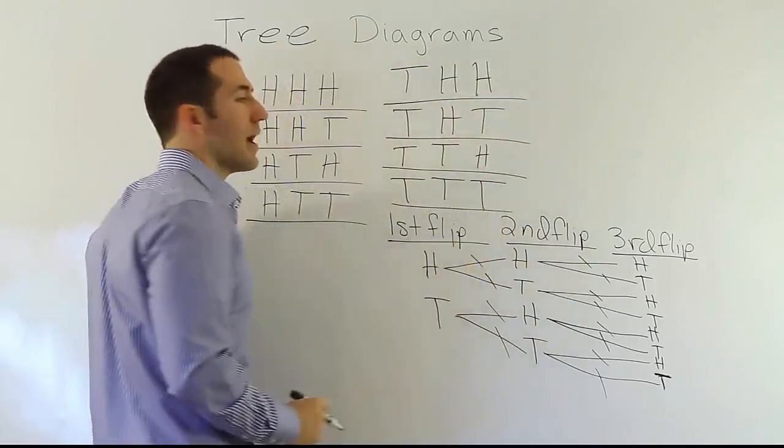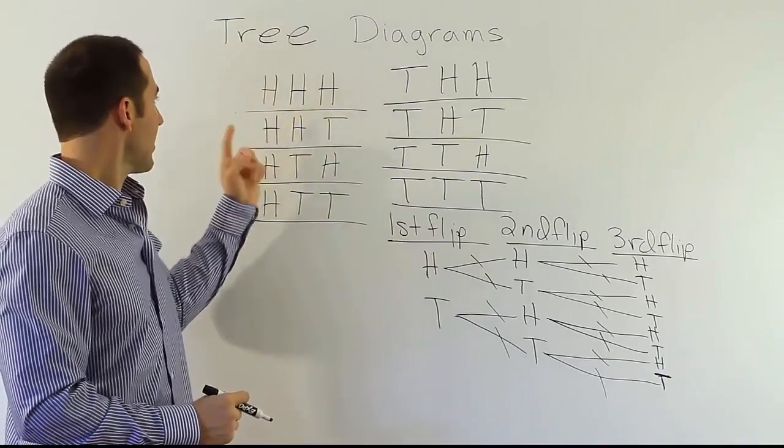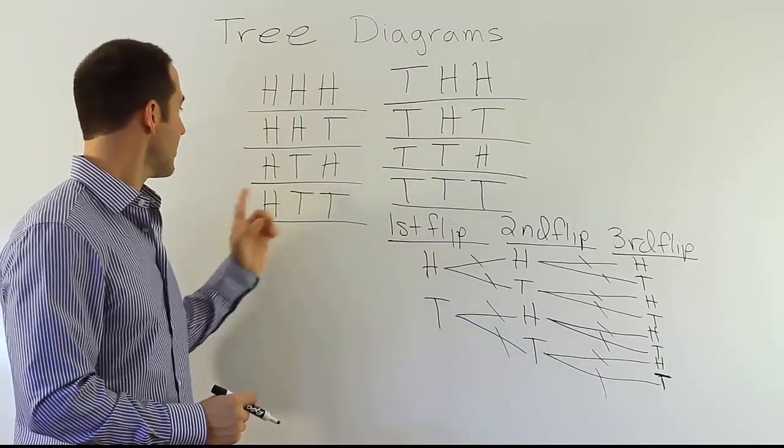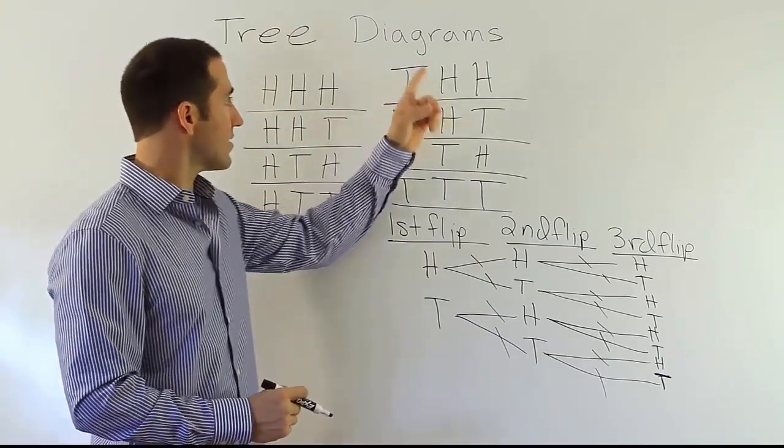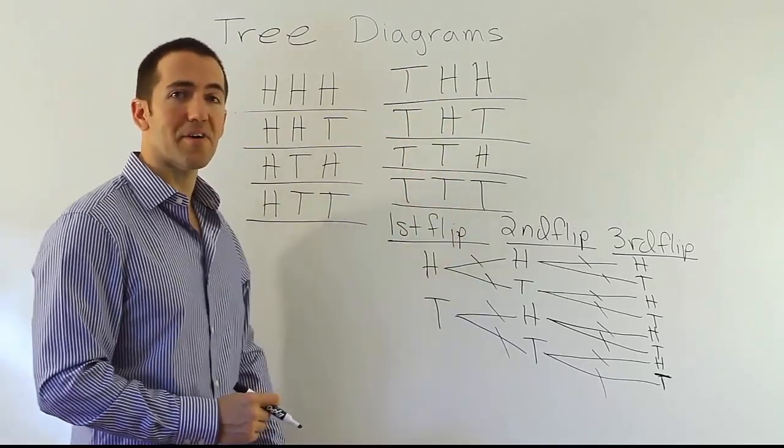So there are your eight unique outcomes that can occur. Eight unique outcomes. Heads, heads, heads. Heads, heads, tails. Heads, tails, heads. Heads, tails, tails. Tails, heads, heads. Tails, heads, tails. Tails, tails, heads. Tails, tails, tails. And that's all of them.